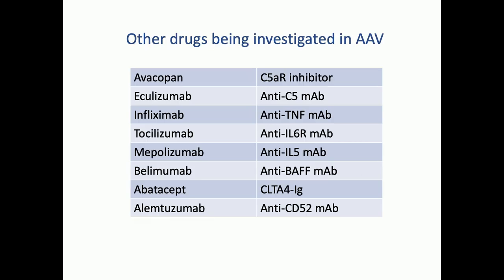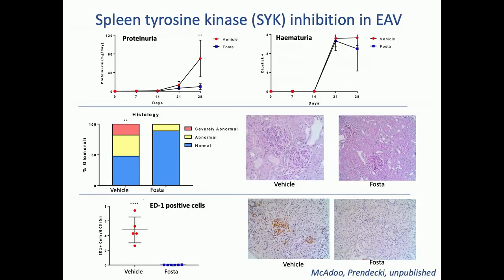Lots of other drugs are being investigated which I don't have time to describe. However, I have to show one rat slide. This is our rat model of experimental autoimmune vasculitis, showing that spleen tyrosine kinase inhibition — introduced at day 21, so when disease has already started — reduces proteinuria and haematuria, significantly improves renal histology, and reduces infiltration by ED1-positive macrophages. This is a very reproducible and reliable animal model of vasculitis where SYK really works, so we absolutely must start a clinical trial.